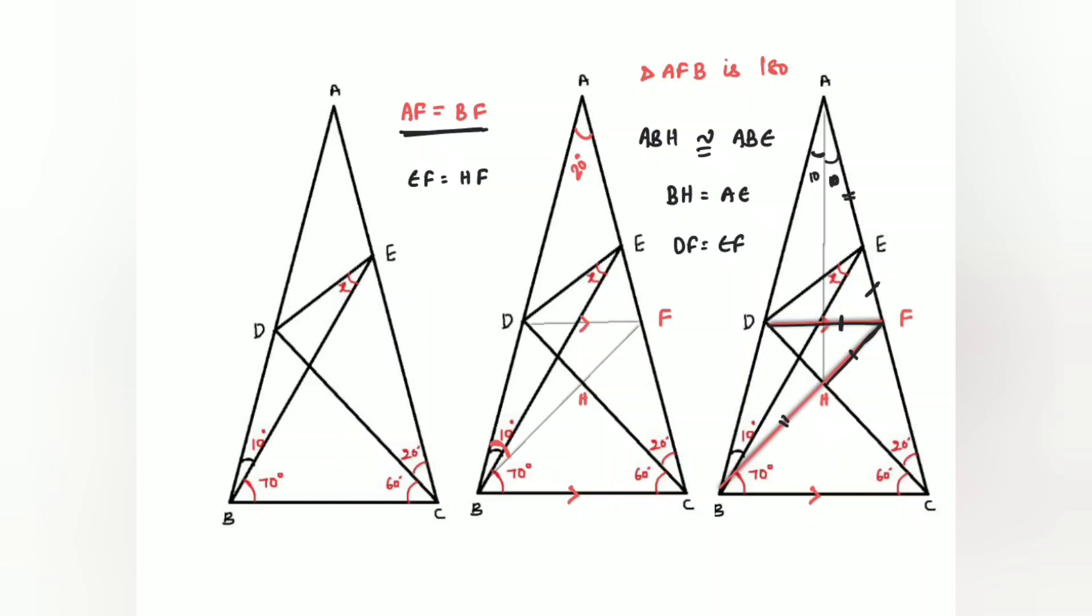If DF also equals EF, now this becomes an isosceles triangle. If it is an isosceles triangle, look at the angle over here. The angle over here is 80 because we drew a parallel line and these two become corresponding angles, 80. So remaining angle is 100, you divide it by 2, so it becomes 50 and 50.